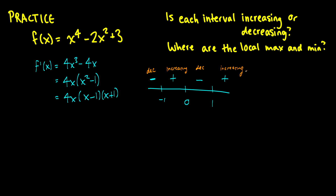So f is decreasing on (-∞, -1), increasing on (-1, 0), decreasing on (0, 1), and increasing on (1, ∞). There is a local maximum at x = 0 since the sign changes from positive to negative, and local minimums at x = -1 and x = 1 since the sign changes from negative to positive. Note this tells us local, not absolute, extrema. This was the first derivative test — the second derivative test will be covered next video. If you have any questions, leave them in the comments.